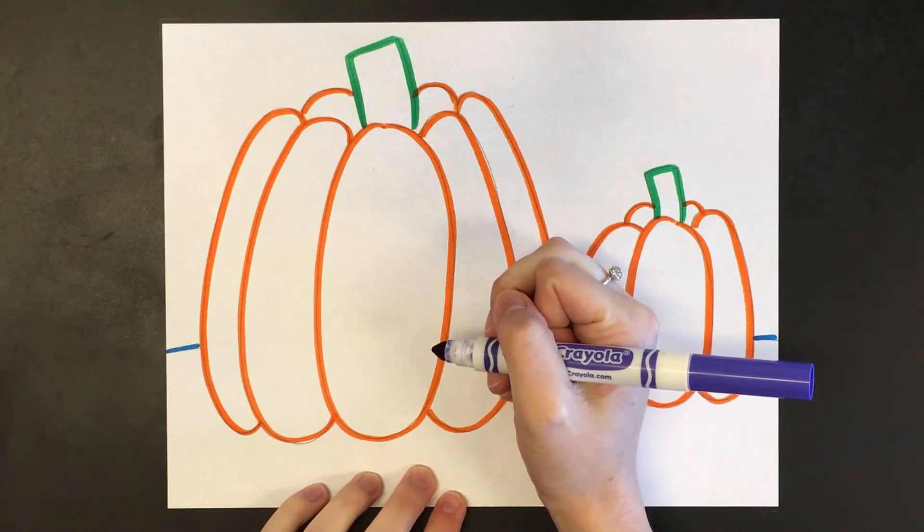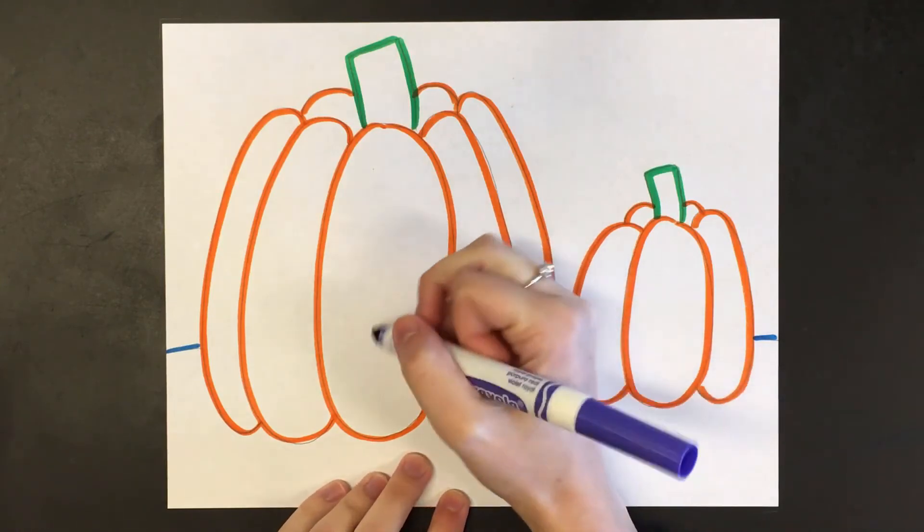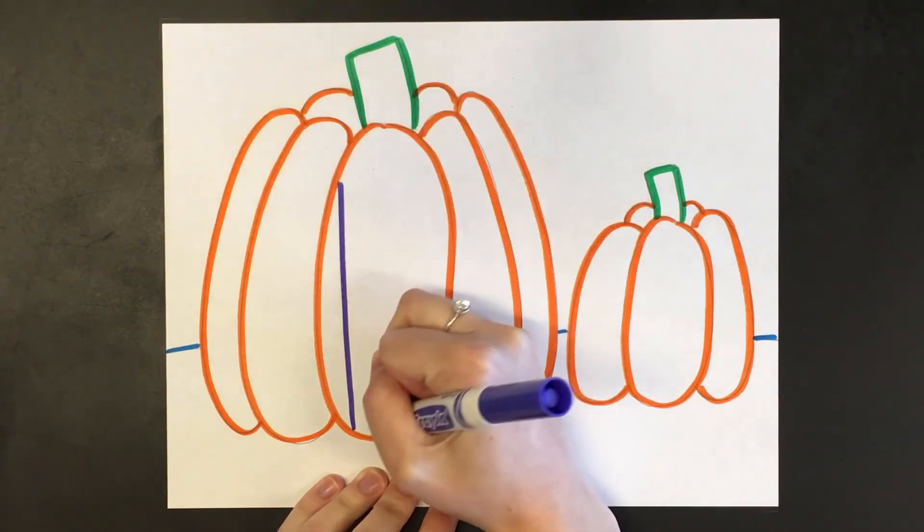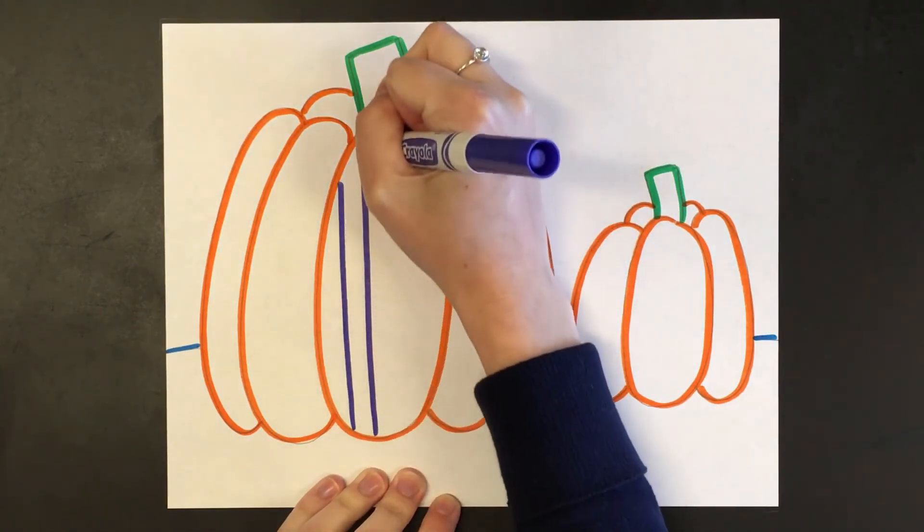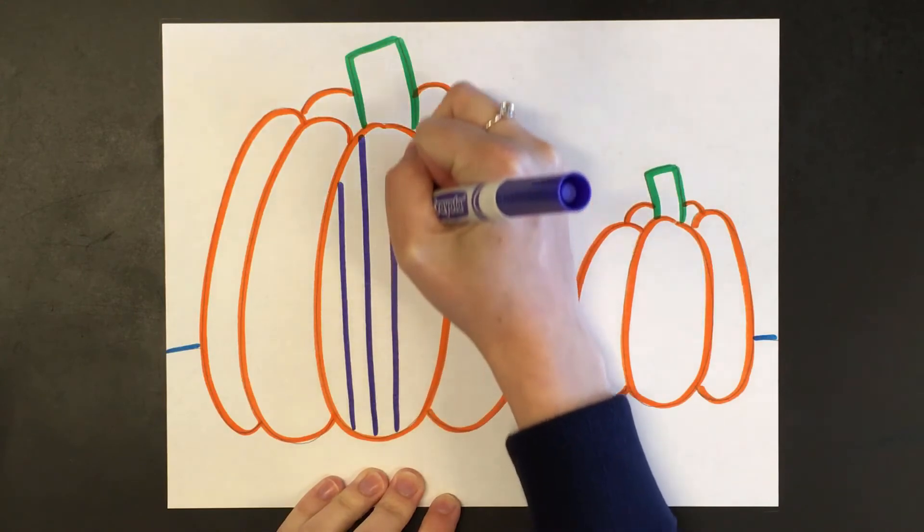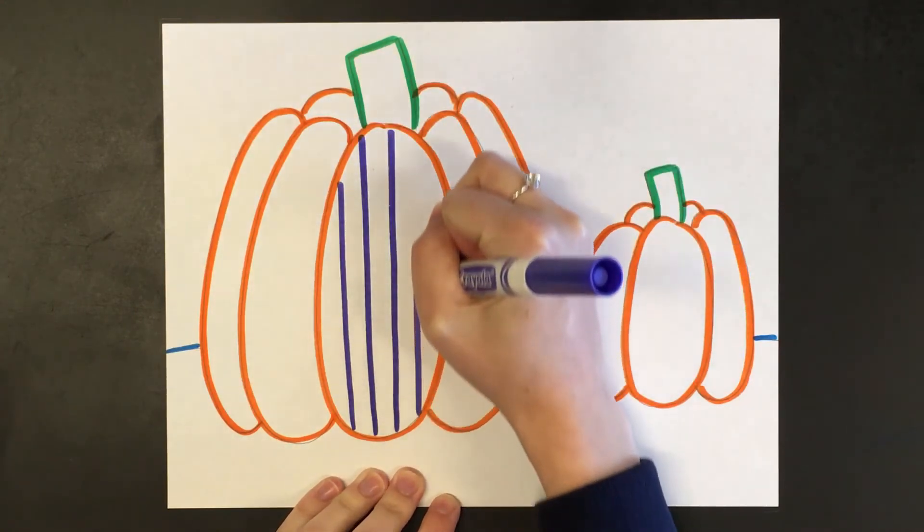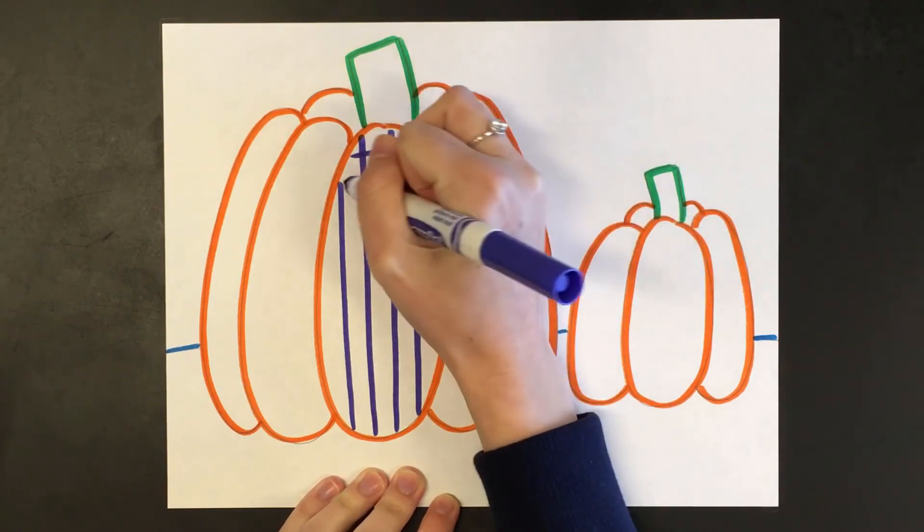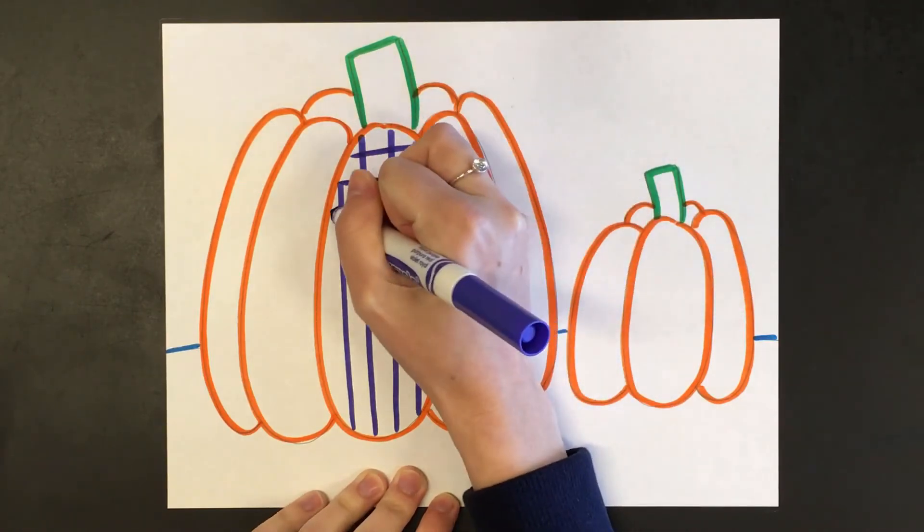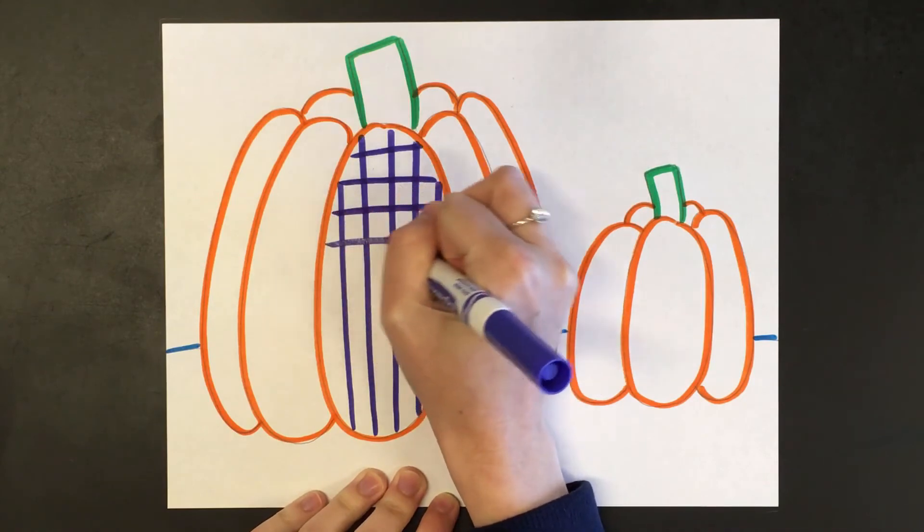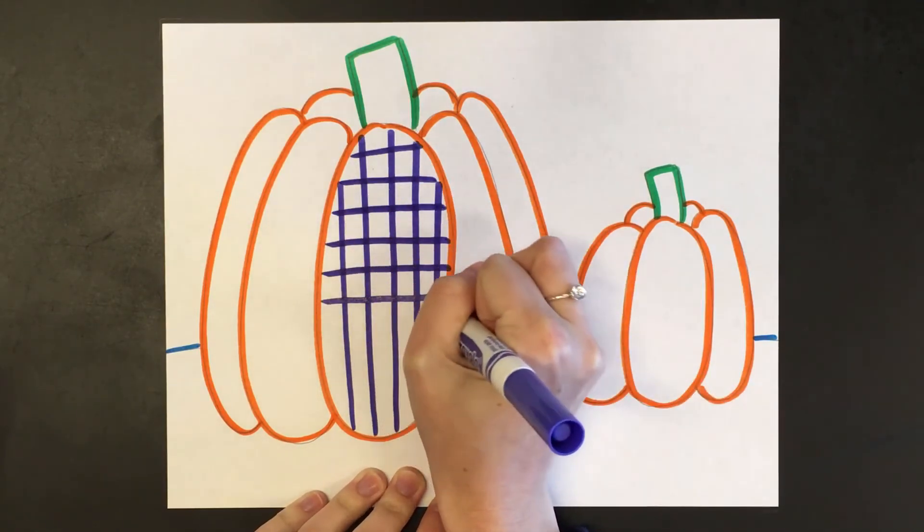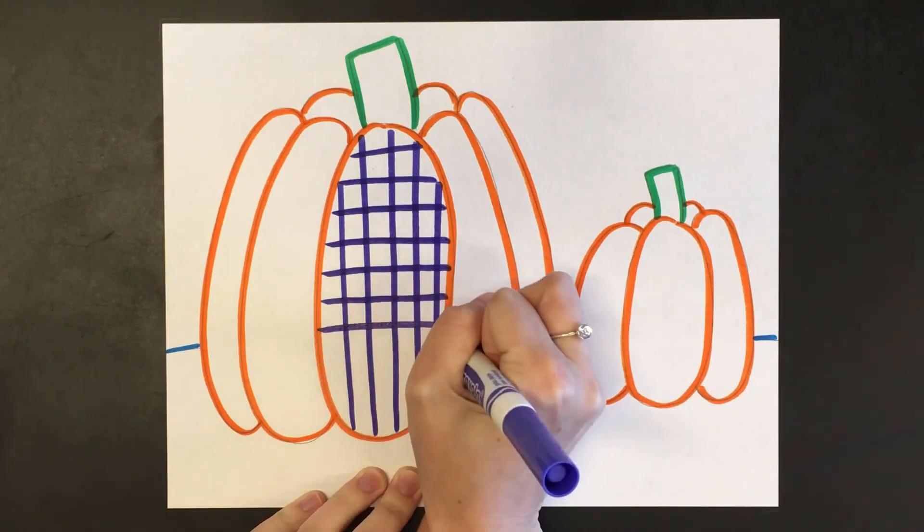I'm going to draw my patterns with marker. If you would like, you could always draw them in pencil first. So I'm just going in and I'm starting to make my pattern, and each section of my pumpkin is going to be a different pattern and a different color. So here I'm doing a checkerboard pattern. Checkerboard patterns are pretty easy to make because you just draw vertical lines and then you draw horizontal lines.